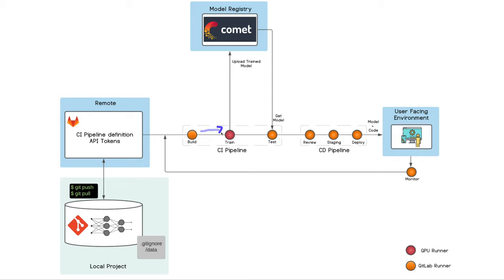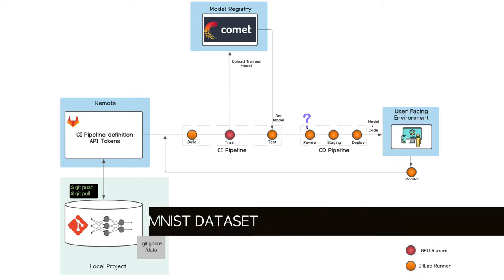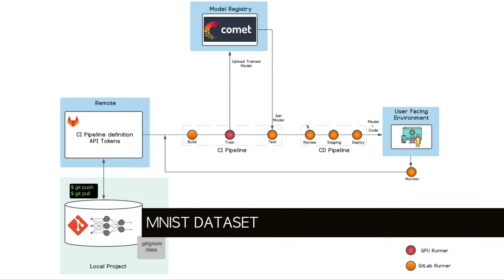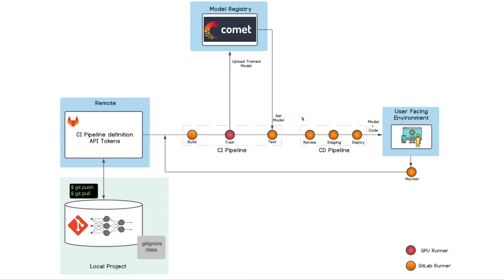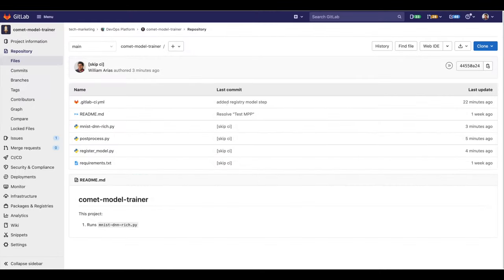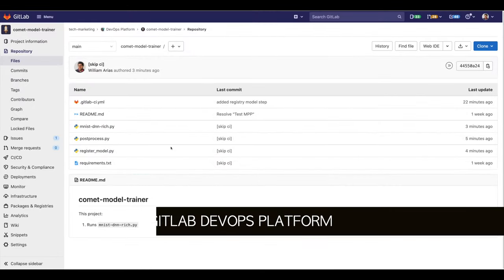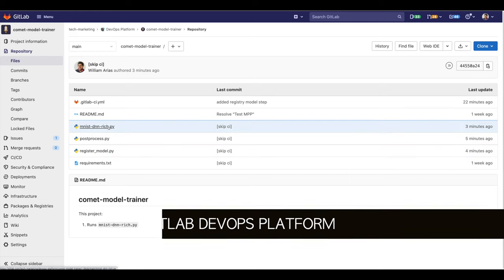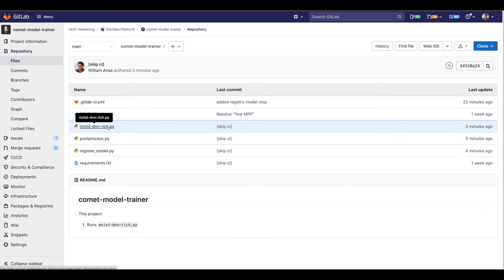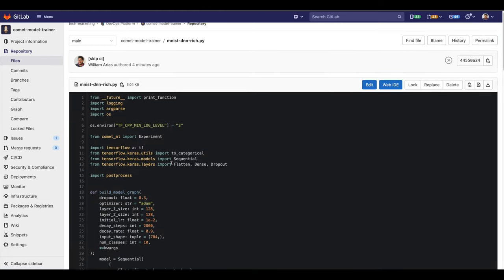Test the model and the code, and if everything goes all right, trigger a CI pipeline, deploying the model and code to a user-facing environment where we can run predictions. In this case, we will use the classic MNIST dataset, and the end users will be able to draw in the app and try it.